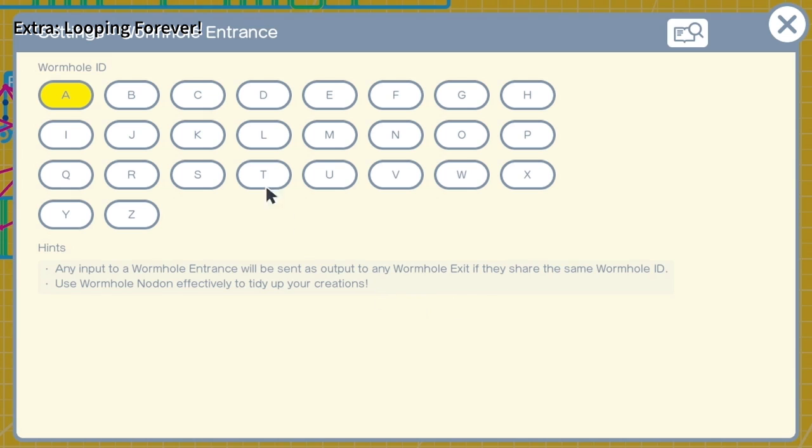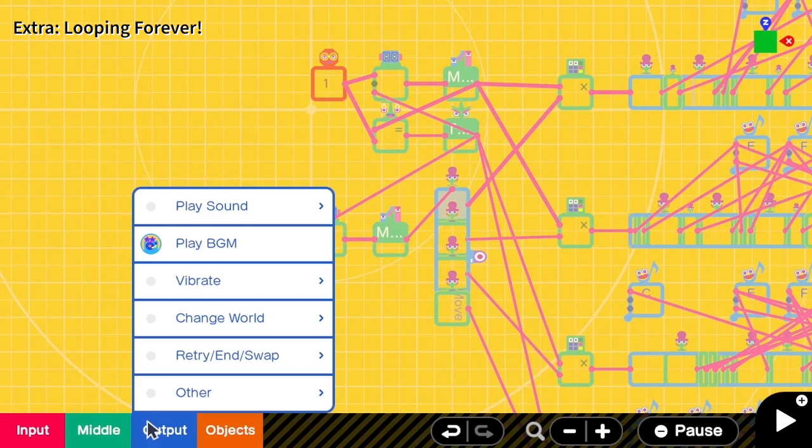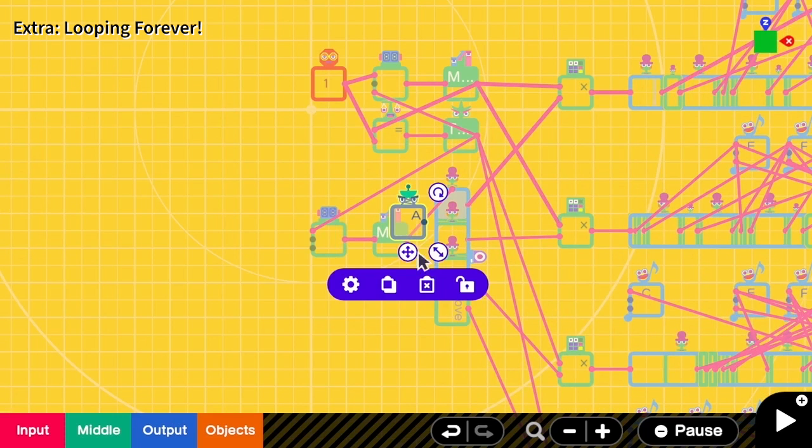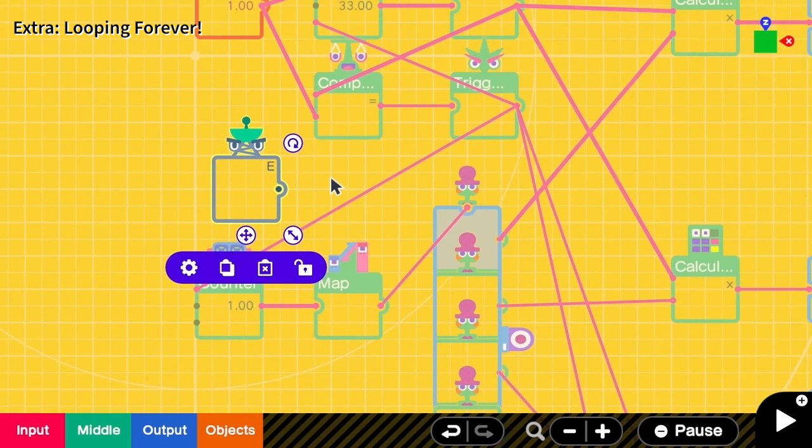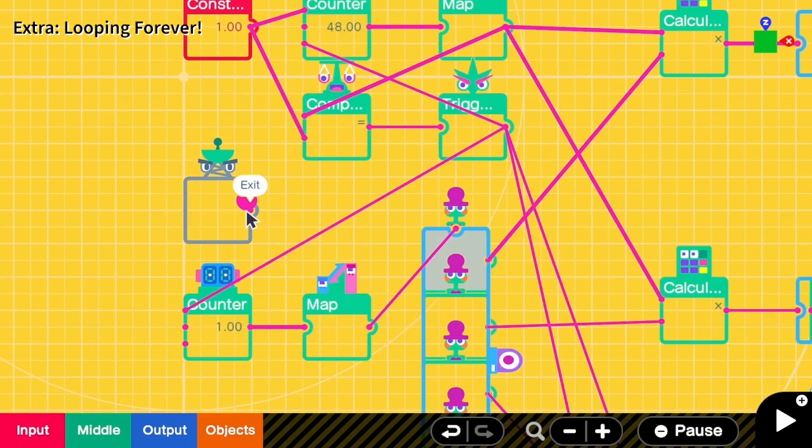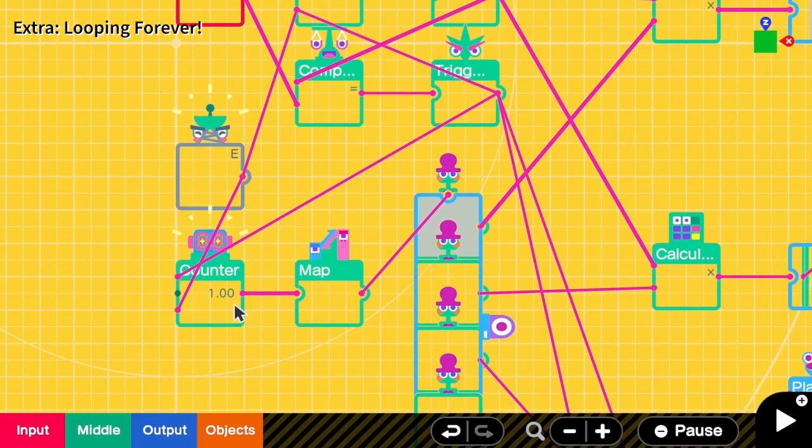Let me rename this to be E, means like the end of this song. Then I add the wormhole exit here and I change this to be E. When this E happens, we should reset both of the counters. And with this our BGM will keep looping forever.